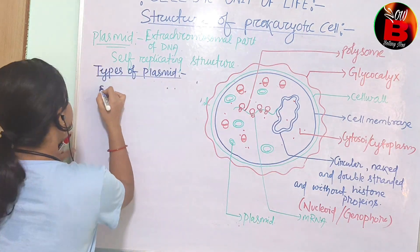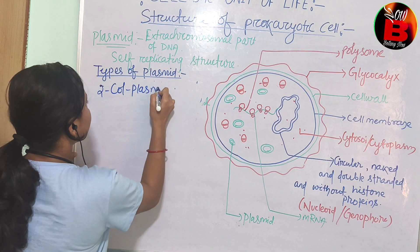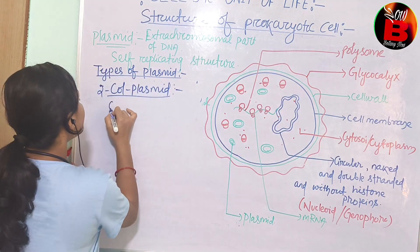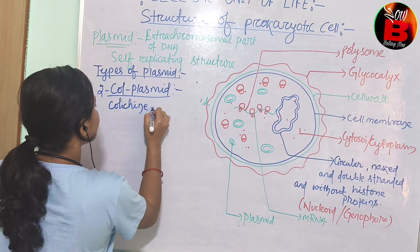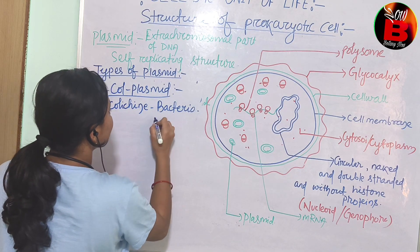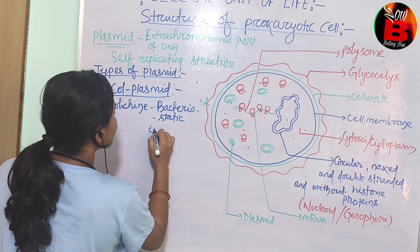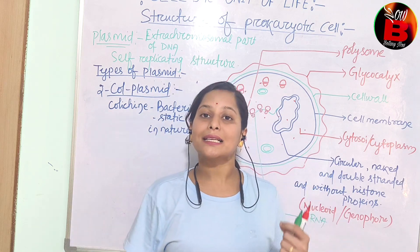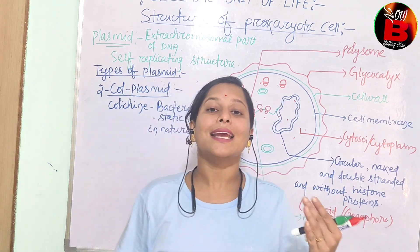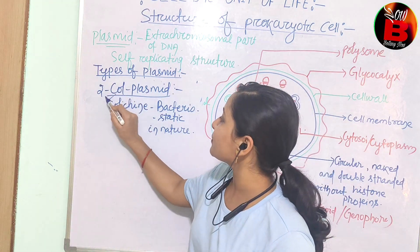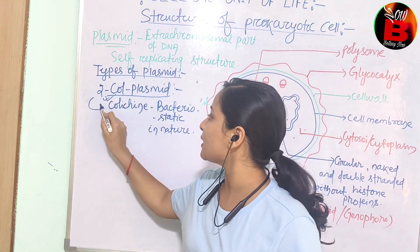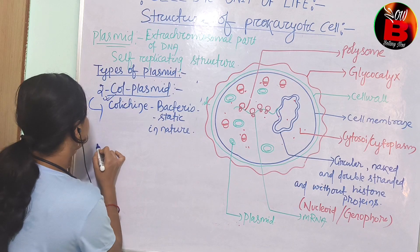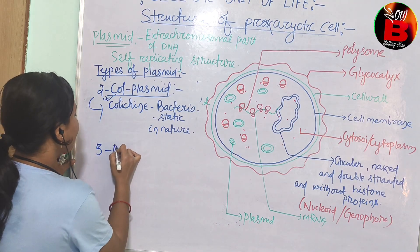The second type is the Col plasmid. The Col plasmid secretes a chemical known as colicine, which is bacteriostatic in nature. When the bacterium is attacked by a harmful bacterium, the Col plasmid secretes colicine to inhibit the growth of the harmful bacterium.